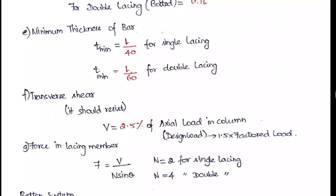The lacing must resist transverse shear V = 2.5% of the axial design load. If the question gives the acting or factored load rather than design load, multiply by 1.5 to get the design load. The force in the lacing member = V / (n × sin theta), where n is the number of lacings: use n = 2 for single lacing and n = 4 for double lacing, and theta is the angle between the lacing and the vertical member.